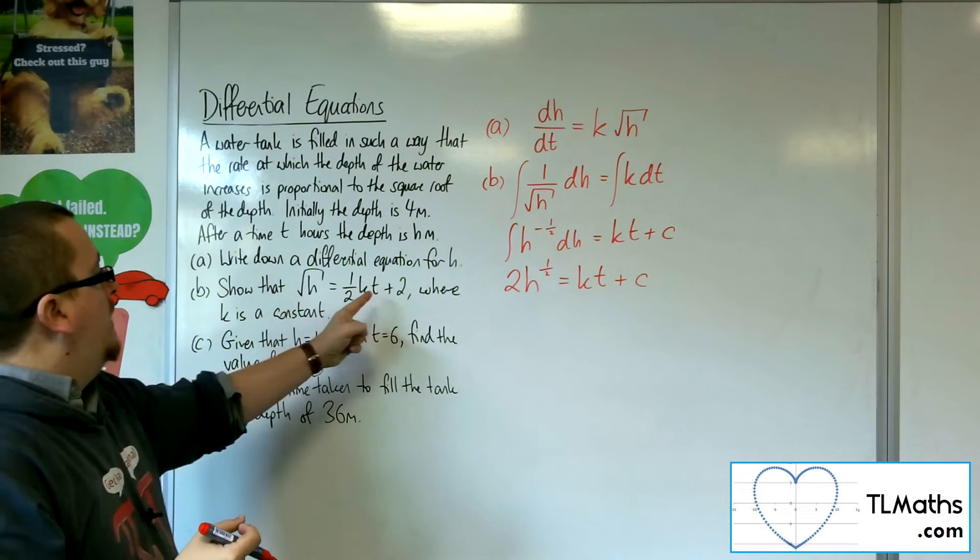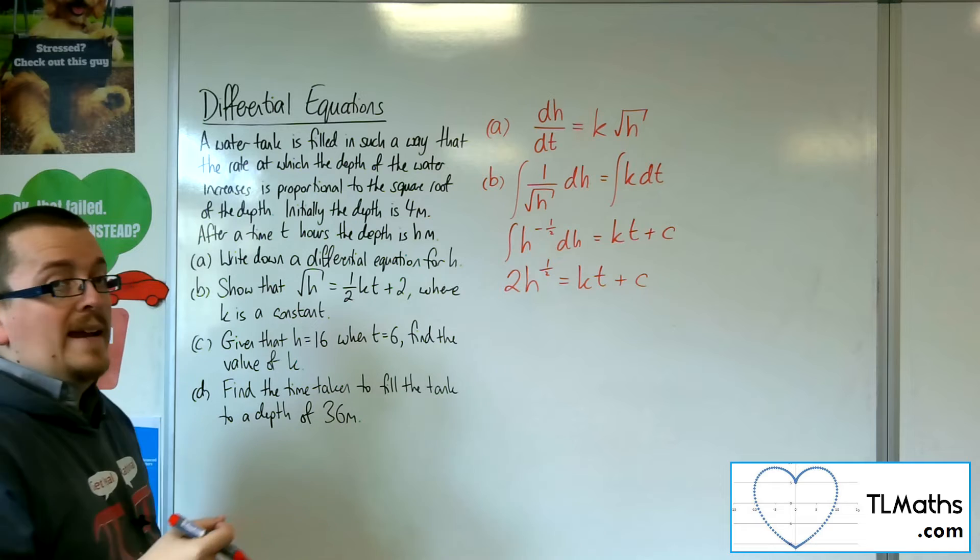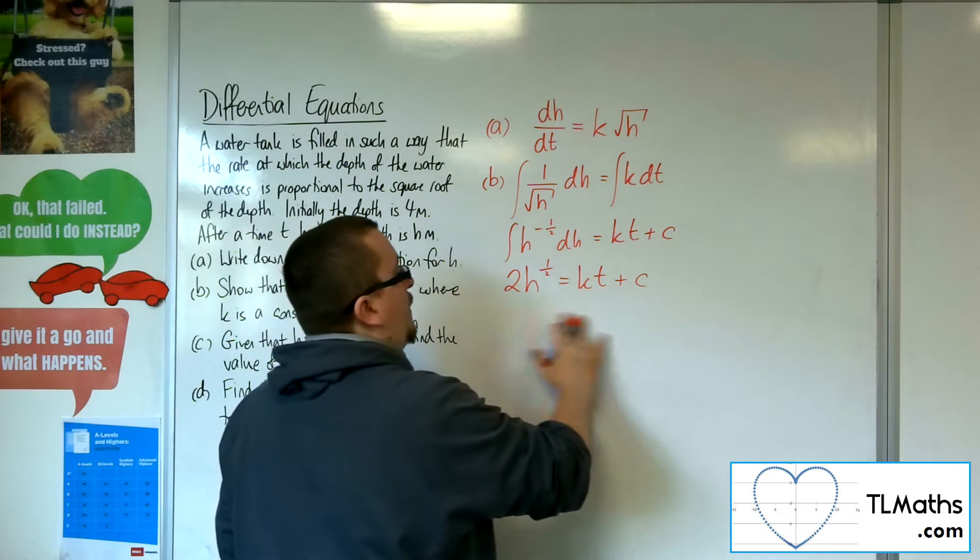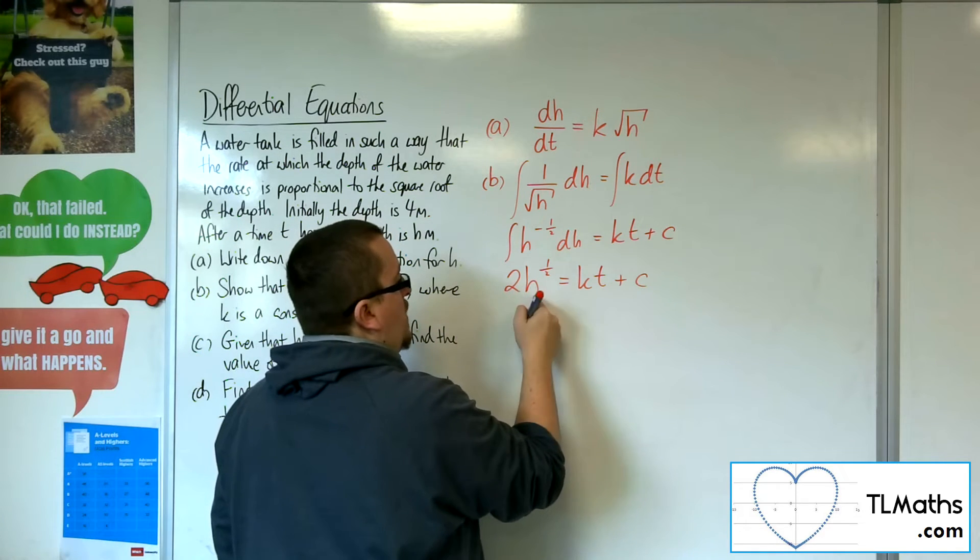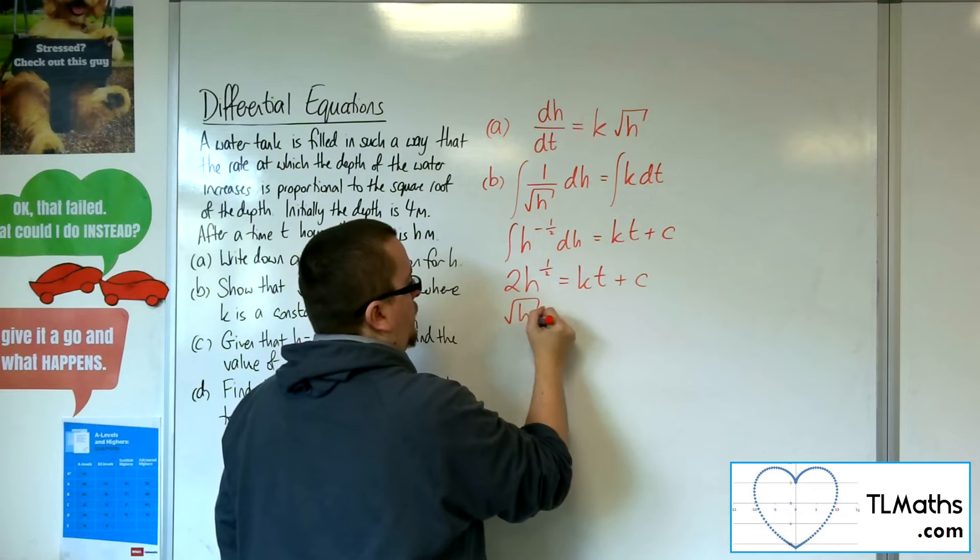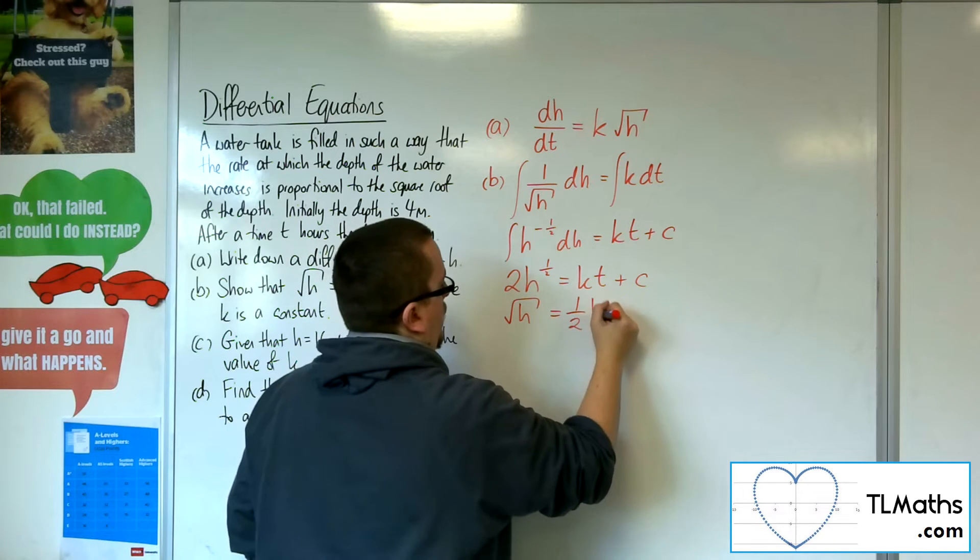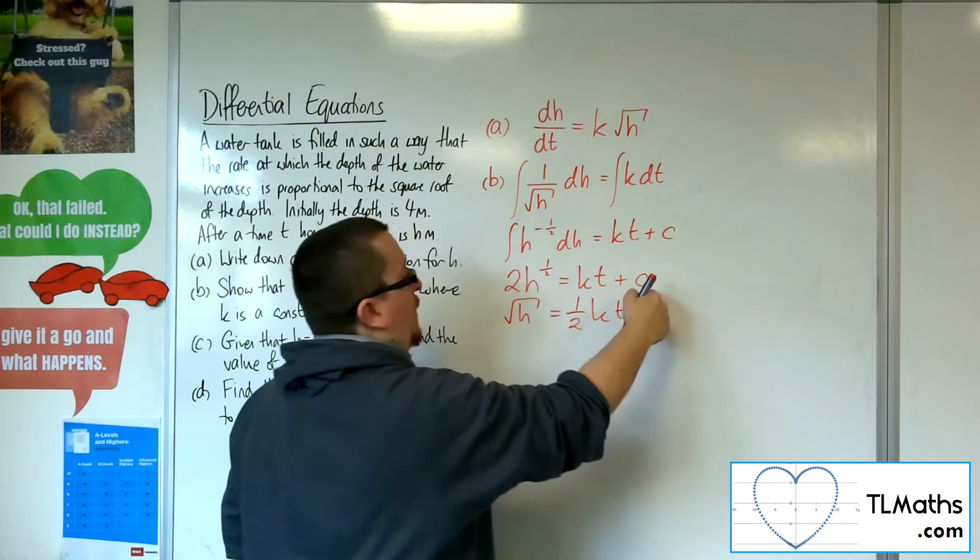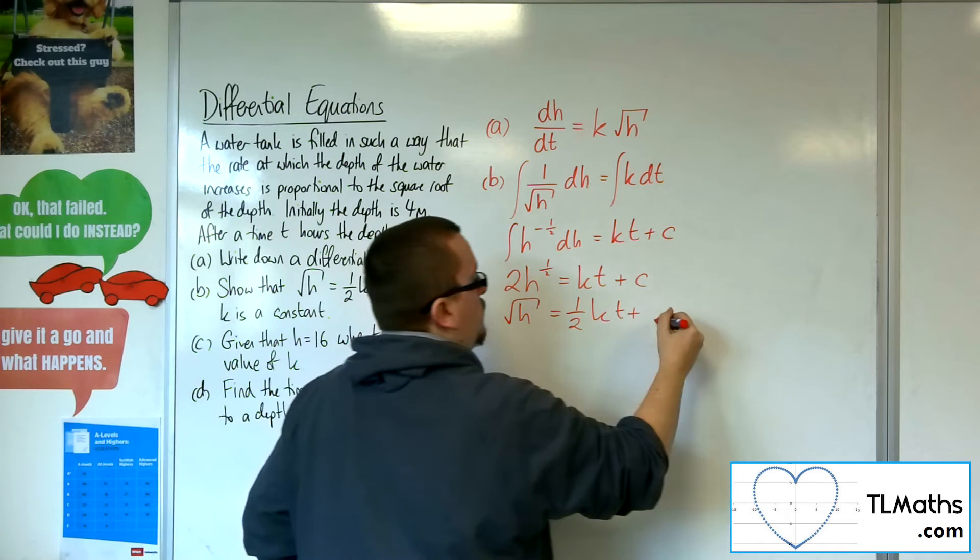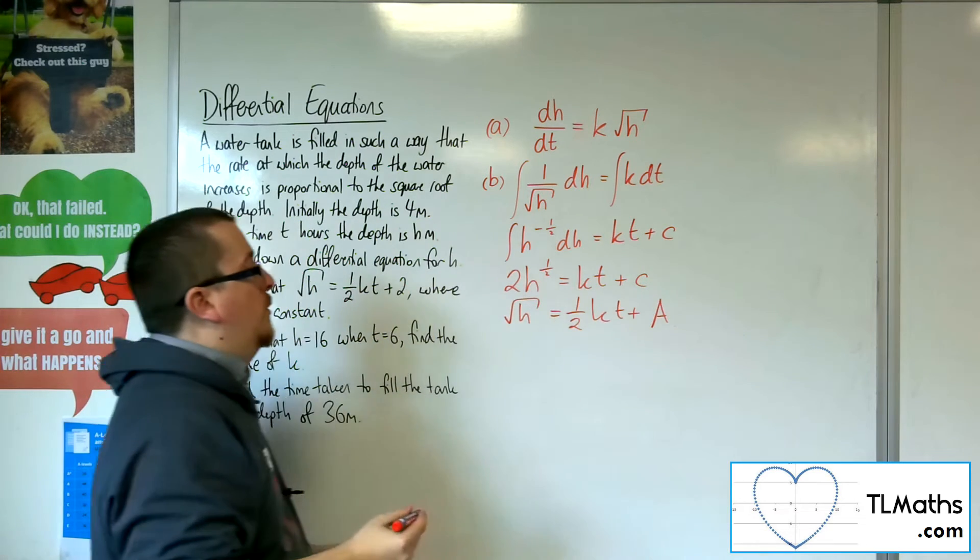Now, it's not quite there yet, but we're getting there. If I divide through by 2, I can rewrite h to the half as root h. Now, dividing the c by 2, I can just replace it with another constant. So let's call that a.